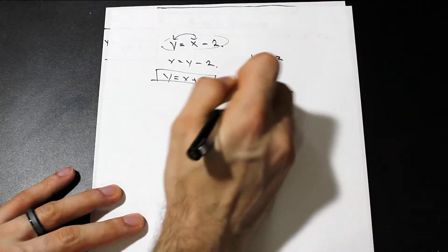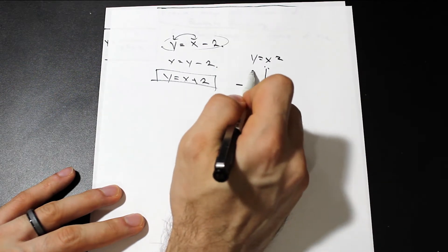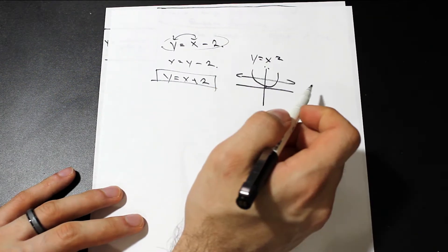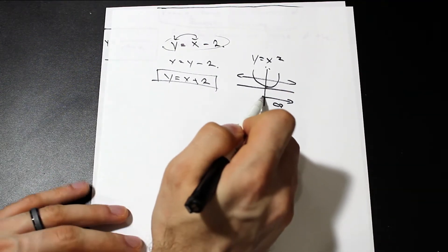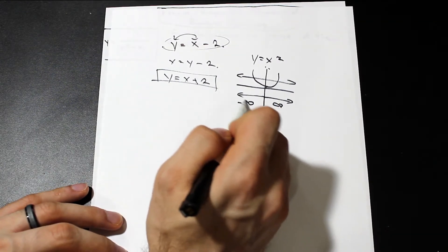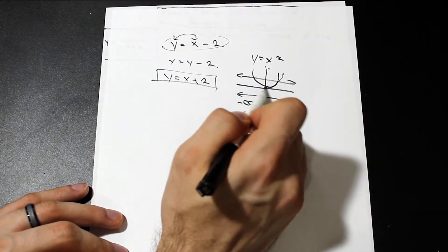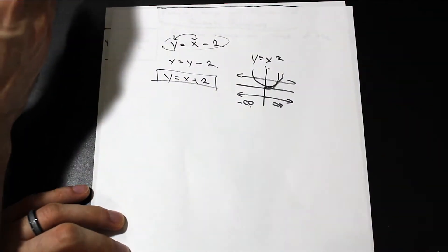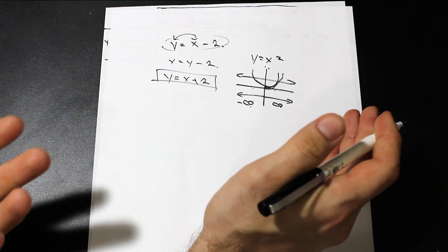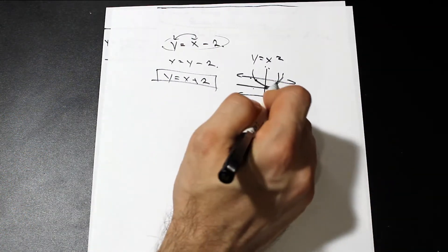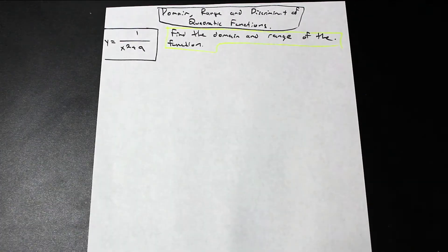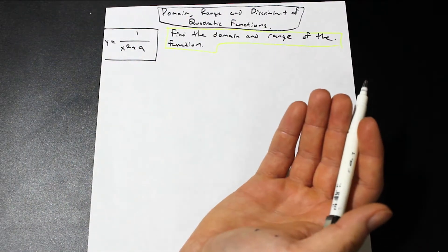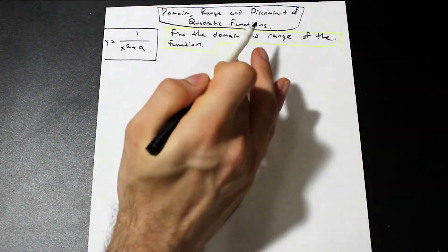The problem with using the inverse method for finding the domain and range with a function like x squared is that it doesn't pass the horizontal line test. So if this function was defined from zero to anywhere on infinity only, or anywhere from zero to negative infinity only, the function would be one-to-one — for every input of x there would be an output of y. But in this case, two and negative two will give you the same answer, which makes the inverse not exist. Hopefully that gives you a little bit of clarification on that video — our apologies if you were confused.